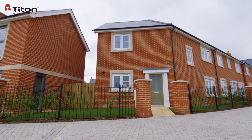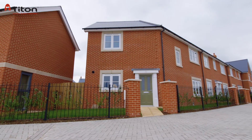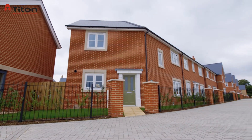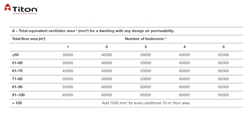This property requires a total of 60,000 millimetres squared EA because it is 90 metres squared in floor area and has three bedrooms. Let's begin our check to see if there are enough vents to give us the 60,000 millimetres squared EA required.